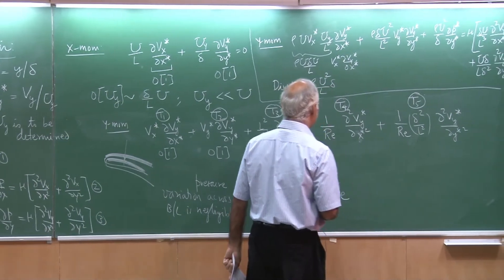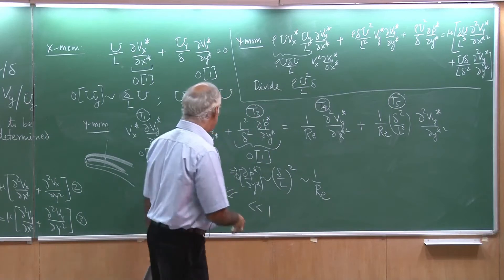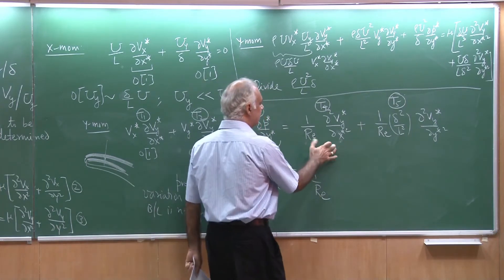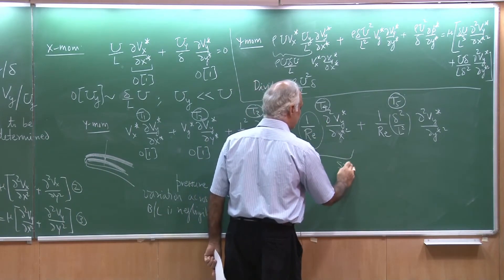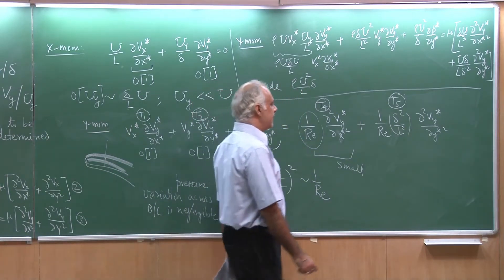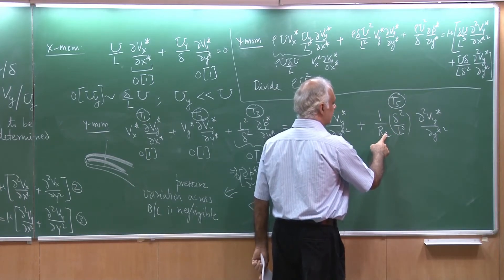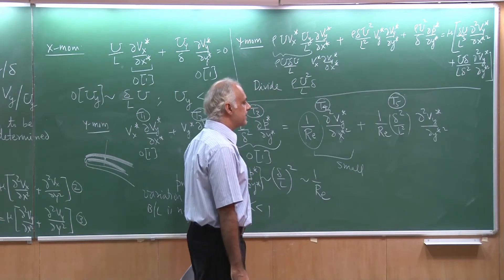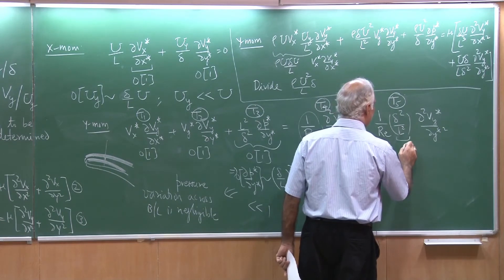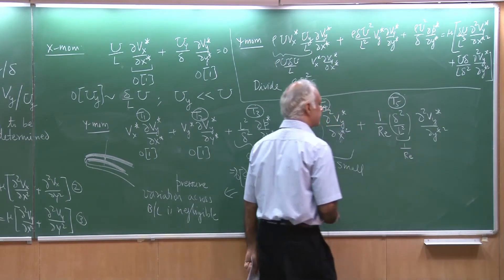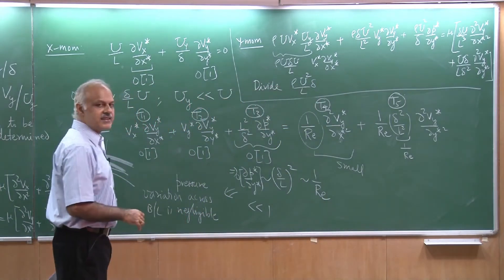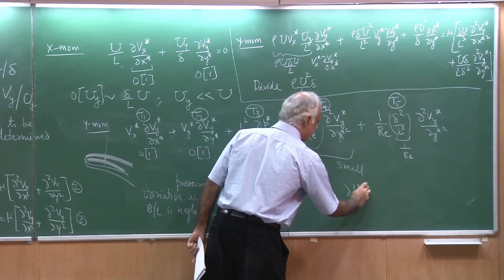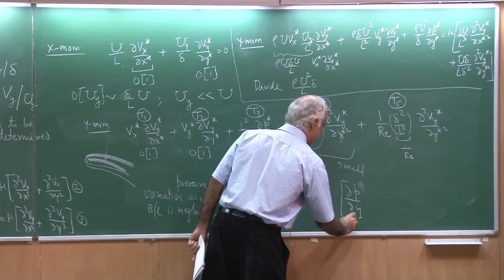Coming back to the viscous terms: they cannot be larger than order of 1 because that is the maximum I can have. Out of these, the T4 term is very small because it is of the order of 1 by Re. The T5 term on the other hand - I have delta squared by L squared varying as 1 over Re, so in fact this term also would be very small, of the order of 1 by Re. So overall my conclusion from this equation is it does not give me anything meaningful. The only thing it tells me is that del P by del y can be neglected.